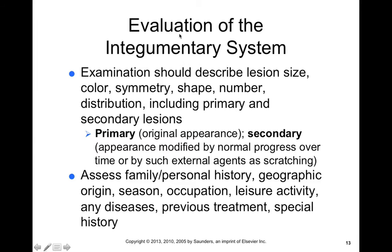In terms of evaluating lesions on the skin, we want to evaluate them based on their size, color, symmetry, shape, number, distribution, and whether it's a primary or a secondary lesion. To get this information, you have to do a visual examination, palpate the skin, and also get a sense of the patient's history. Assessing family and personal history is important because if it's a new mole, that's more important to check out than if it's a mole they've had their entire lifetime — though moles you've had your entire lifetime can still become cancers. Geographic origin plays a role as well, as do season, occupation, leisure activity, and any other diseases or previous treatments that may affect the skin.